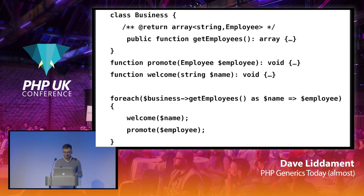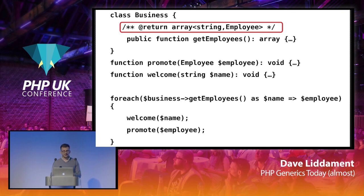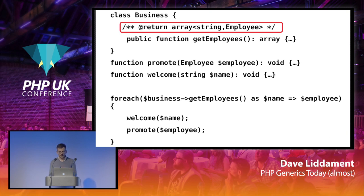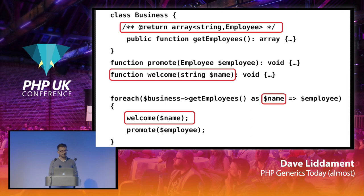An array could have keys of either ints or strings, or a mixture of both. So looking at this code, we can't guarantee correctness at static analysis. If we gave this code to Psalm, it would complain — it would say we're calling welcome but can't guarantee we're calling it with type string. So how do we get around that? We can change the annotation slightly: instead of @return Employee[], we say @return array<string, Employee>. That means array keys are all of type string and array values are all of type Employee, so we now know that name is of type string.